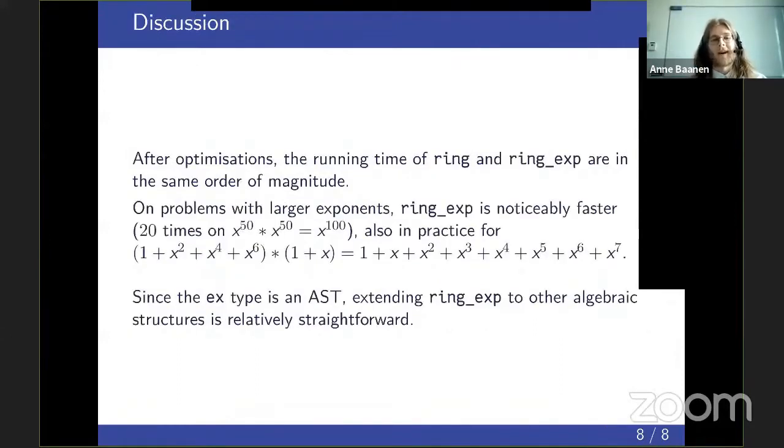When I ran some tests on ring and ring_exp to compare the speed, I generated random expressions and tested the running time. The running time is approximately in the same order of magnitude. Ring is a bit faster because it has less field width and uses a more optimal normal form which we cannot use anymore for ring_exp. But as soon as you get into the problem domain where ring_exp was really designed for, like larger exponents like 50 or 100, then ring_exp is noticeably faster, like 20 times. And users of mathlib actually reported they're very happy because ring_exp really runs a lot faster than ring on these examples.